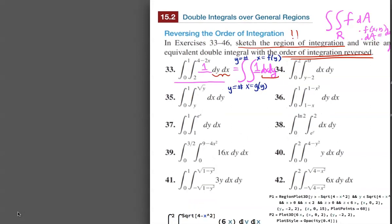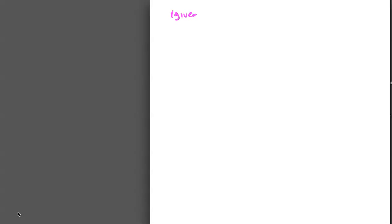To figure out how to reverse the order of integration correctly, I'll sketch the region of integration as the problem suggests. The integral given is the double integral from y=2 up to y=4−2x, integrating 1 dy dx, with x going from 0 to 1. I like to label the limits clearly: y equals, y equals, x equals, x equals.